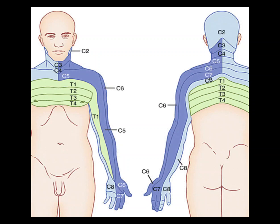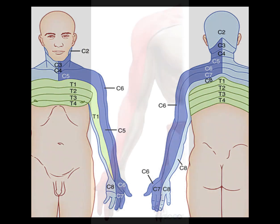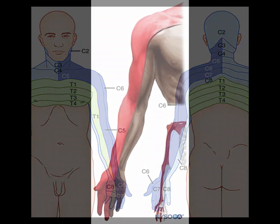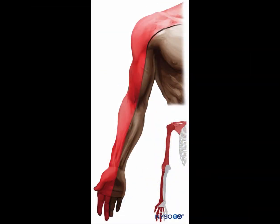20 to 25 mils of local anesthetic results in a preferential block of C5 to 7, which innervate the deltoid, supraspinatus, infraspinatus, and teres major muscles. The interscalene block is suitable for operations on the shoulder, clavicle, and upper arm.